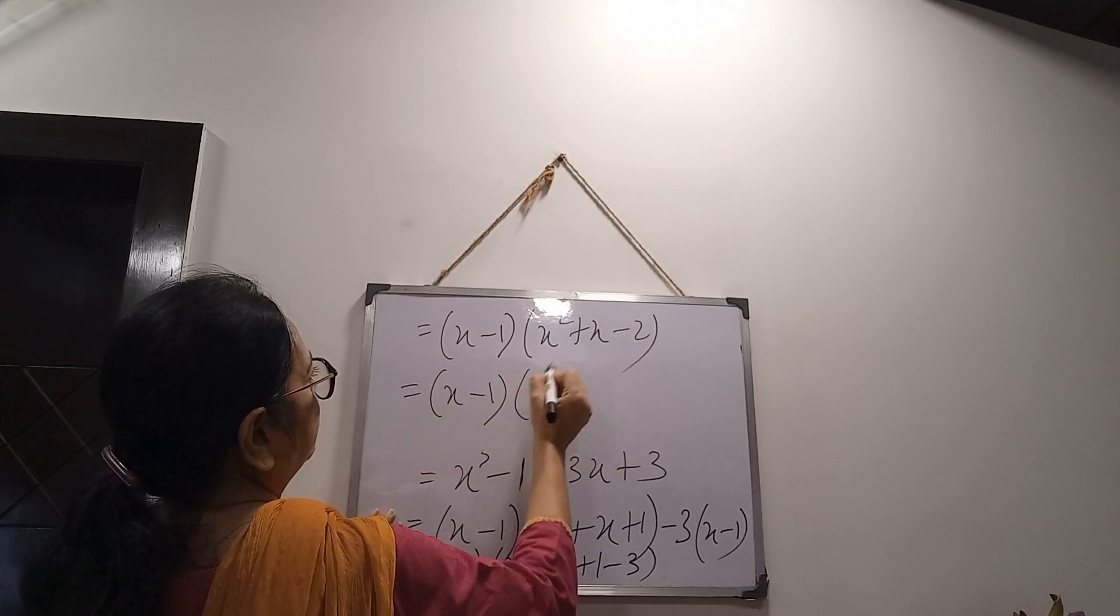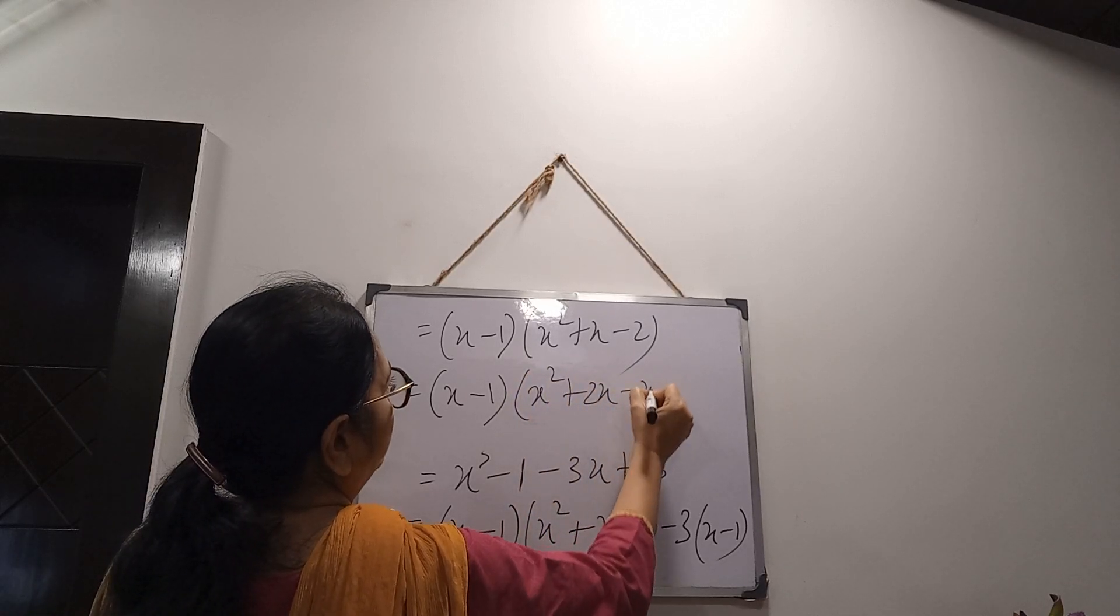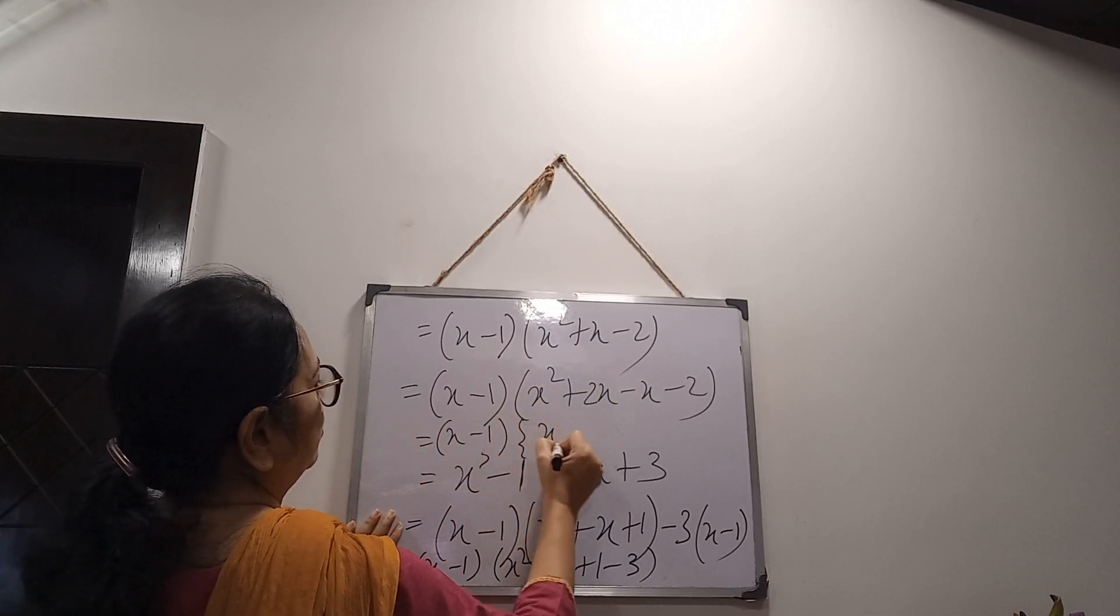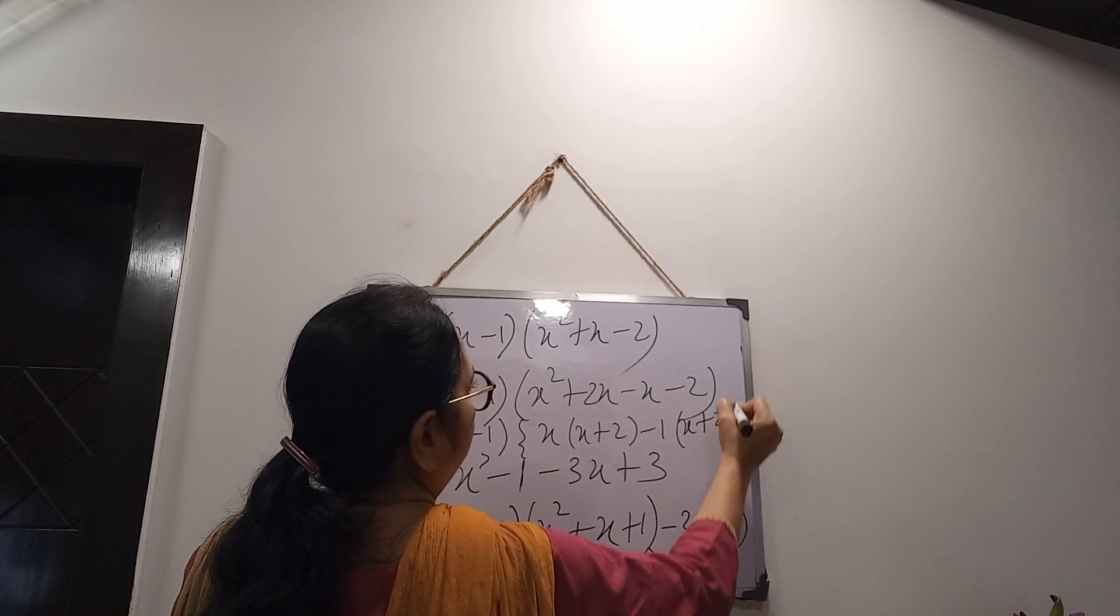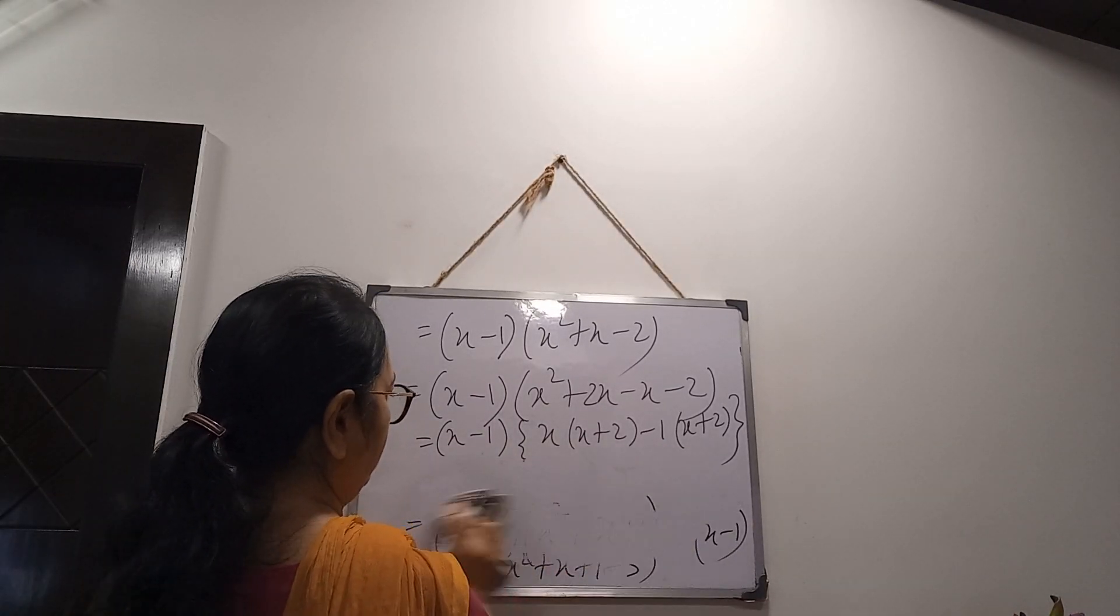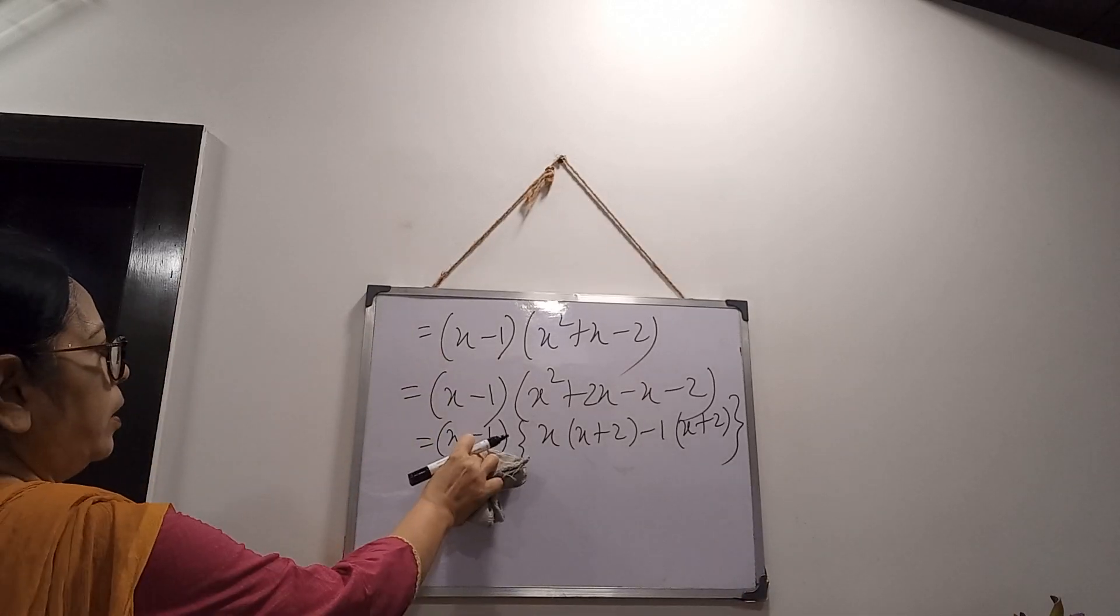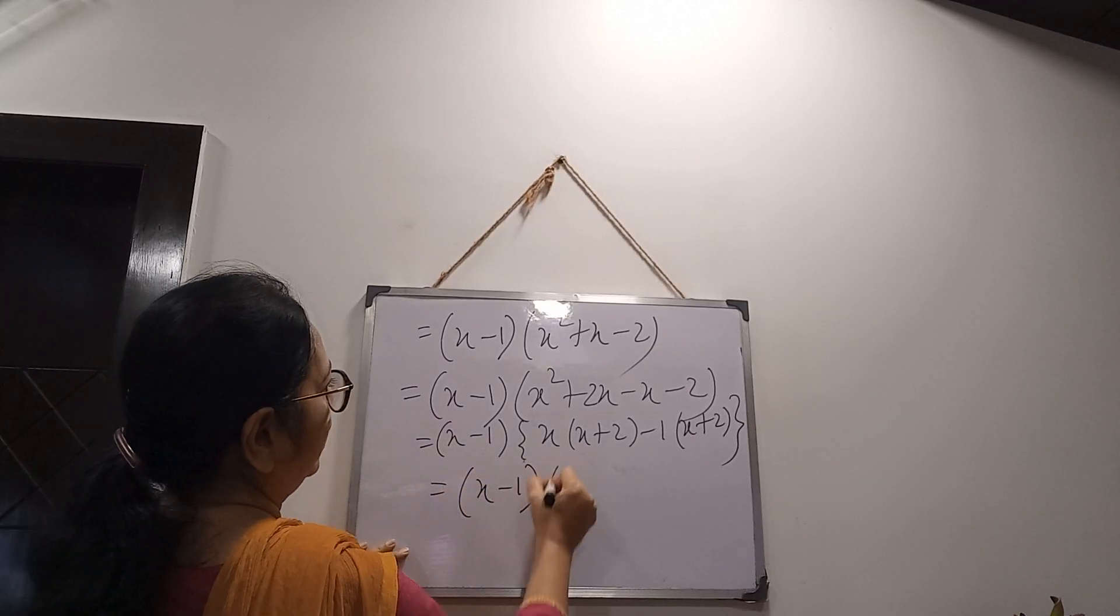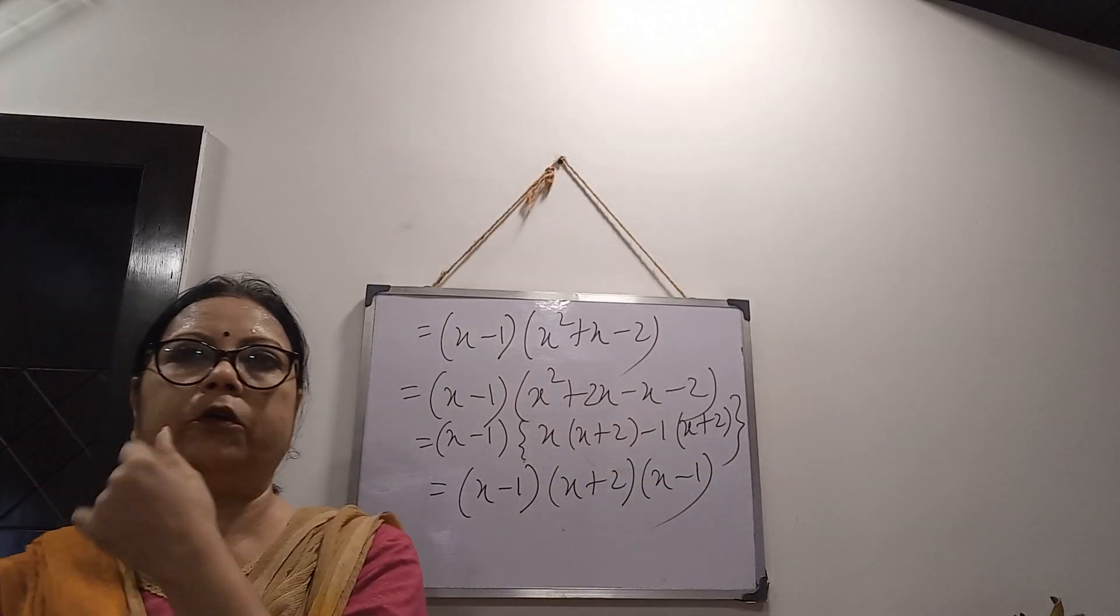Here, 2 factors of 2 are 2 and 1. So by middle term, x² + 2x - x - 2. It is coming plus x. Then take common x: x + 2 minus 1 common x + 2. Then your factors are x - 1, x + 2, and x - 1. These are your factors.